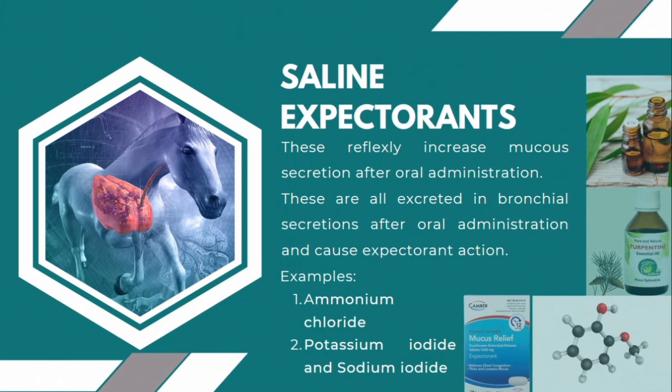Saline expectorants reflexly increase mucus secretion after oral administration. These are all excreted in bronchial secretion after oral administration and cause an expectorant action. Examples include ammonium chloride, potassium iodide, and sodium iodide.